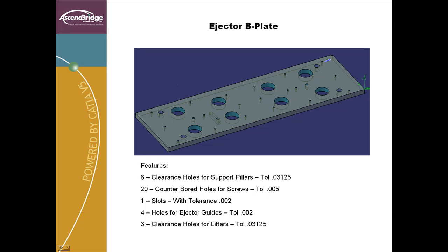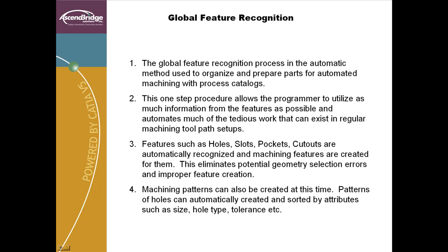Non-native machining with applications that require a STEP, IGES, or intermediate translation loses capability. The next step involves running the global feature recognition tool from within the prismatic machining workbench. This tool is the automatic method for organizing and utilizing the features of a CATIA V5 CAT part. Features such as holes, slots, pockets, and complex steps are recognized and automatically assigned to the appropriate machining features.